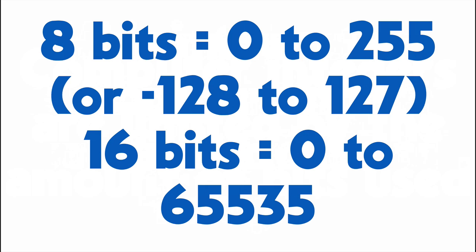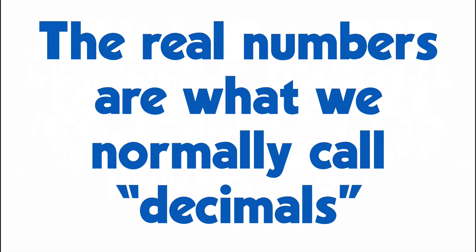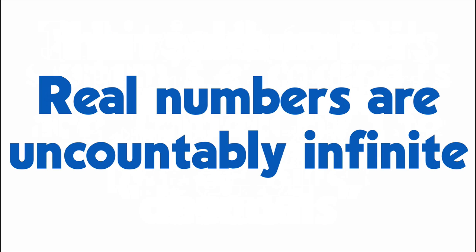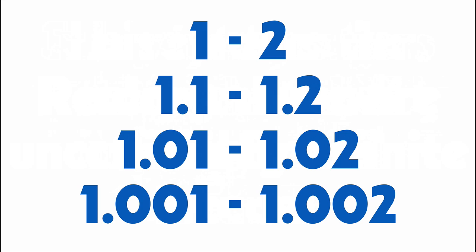The real numbers represent any number that you can represent by a set of decimals that ends. Mathematicians call this set uncountably infinite because between any two real numbers, there's an infinite number of real numbers between them. So between 1 and 2, you have 1.001 and so on and so forth.